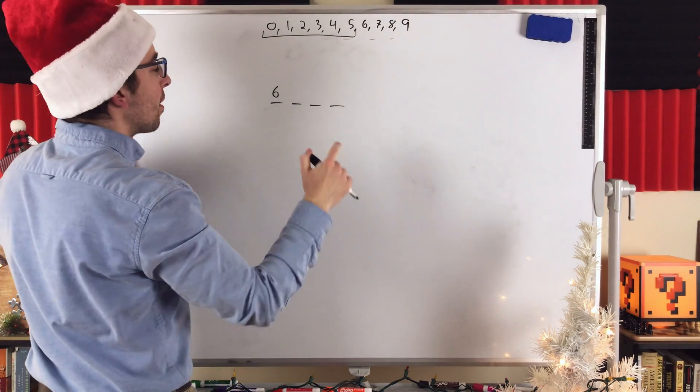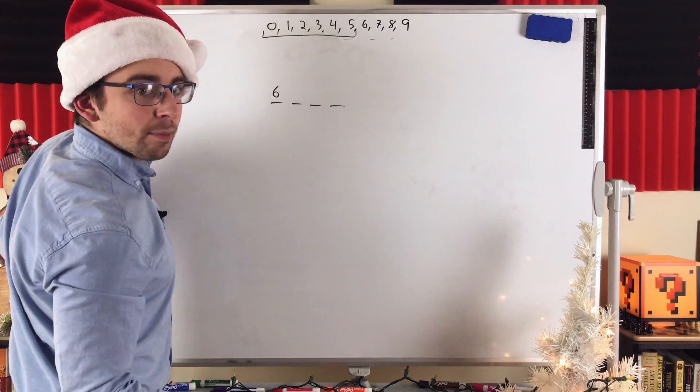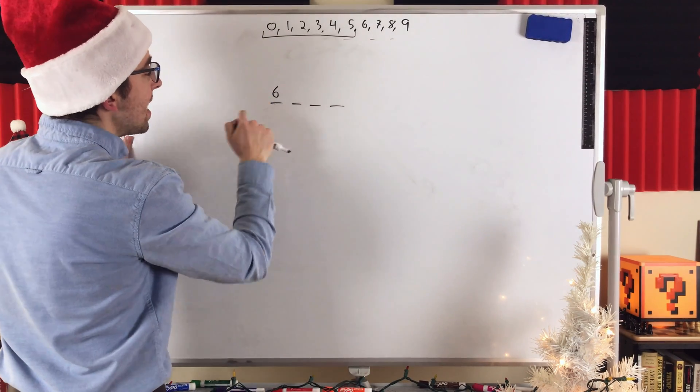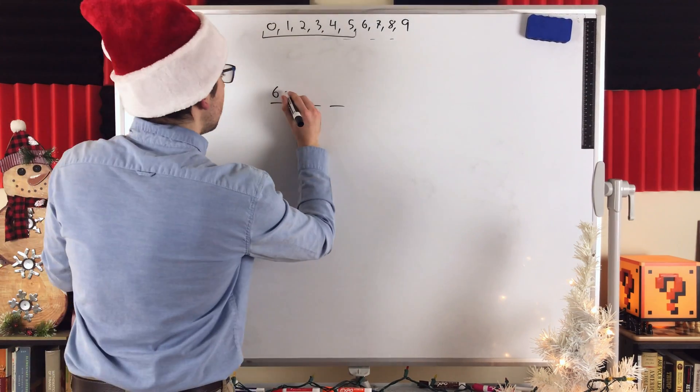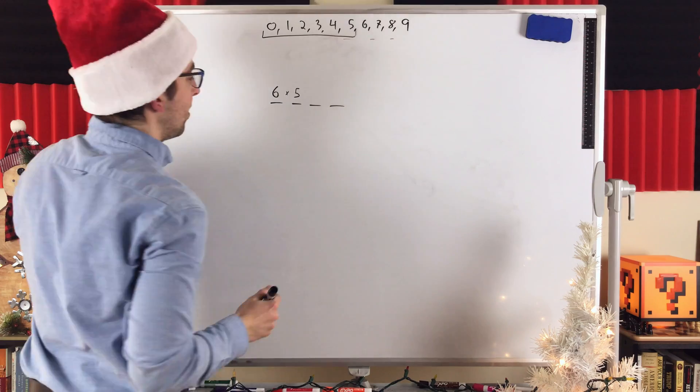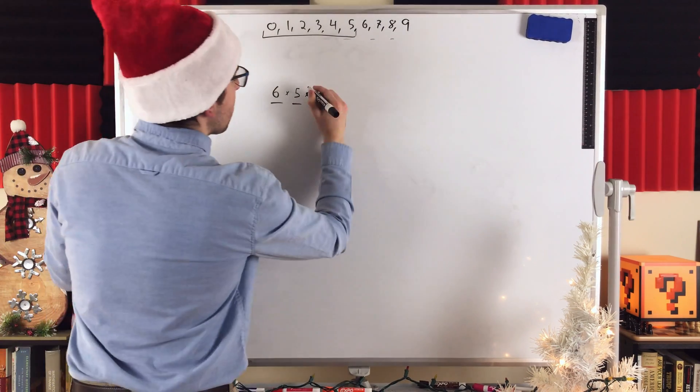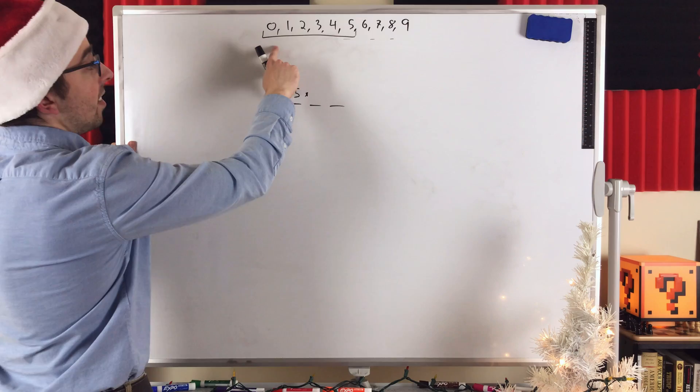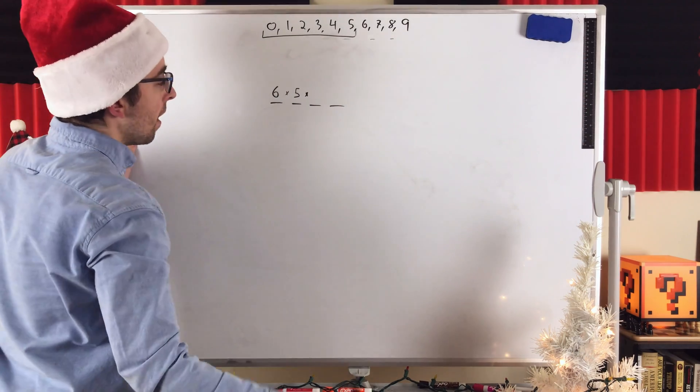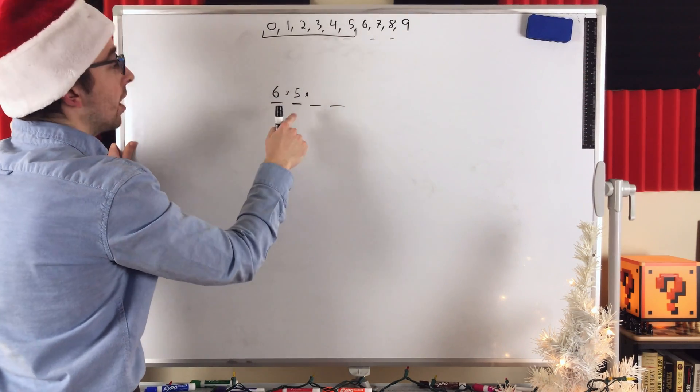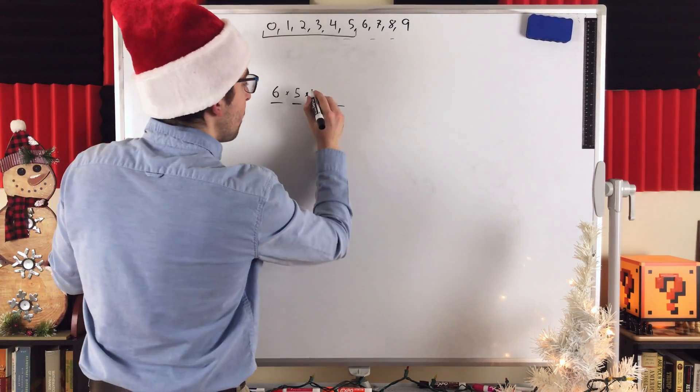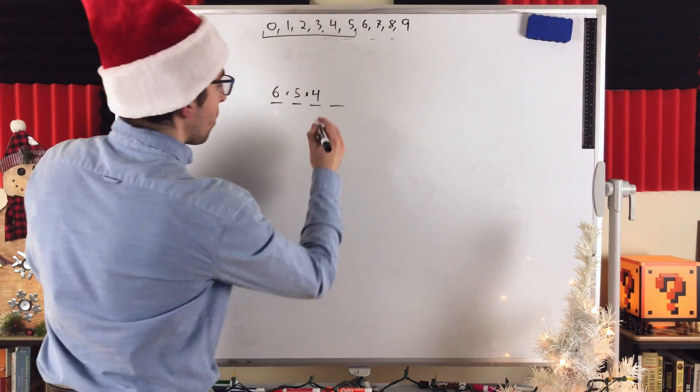For the second digit, there are 5 possibilities, because we can't repeat the digit that went first. So, there's only 5 possibilities for the second number in our code. And then, similarly, for the third number in our code, we had 6 digits to choose from originally, but we can't choose the first one again. We can't choose the second one again. So, now, only 4 digits remain to choose from.